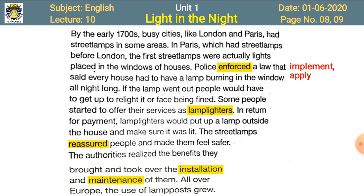If the lamp went out, people would have to get up to relight it, or face being fined. If they did not do so, they were fined — 'jurmana kiya jata tha'. Some people started to offer their services as lamp lighters. 'Lamp lighters' means men who burn lamps, in return for payment.